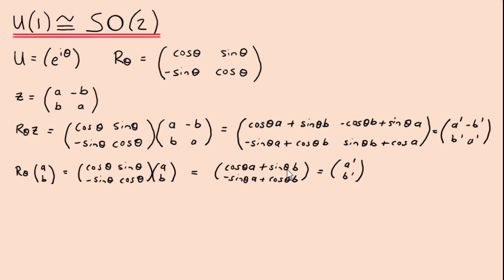We're applying the same rotation matrix: first to a matrix that represents a complex number, and second to a vector. But you can see that the answer you get is actually the same. So a' is the top-left entry in the first case and the top entry in the second — they are exactly the same, and likewise with b'. This demonstrates that you get the same result whichever one you apply, so they have the same underlying structure.